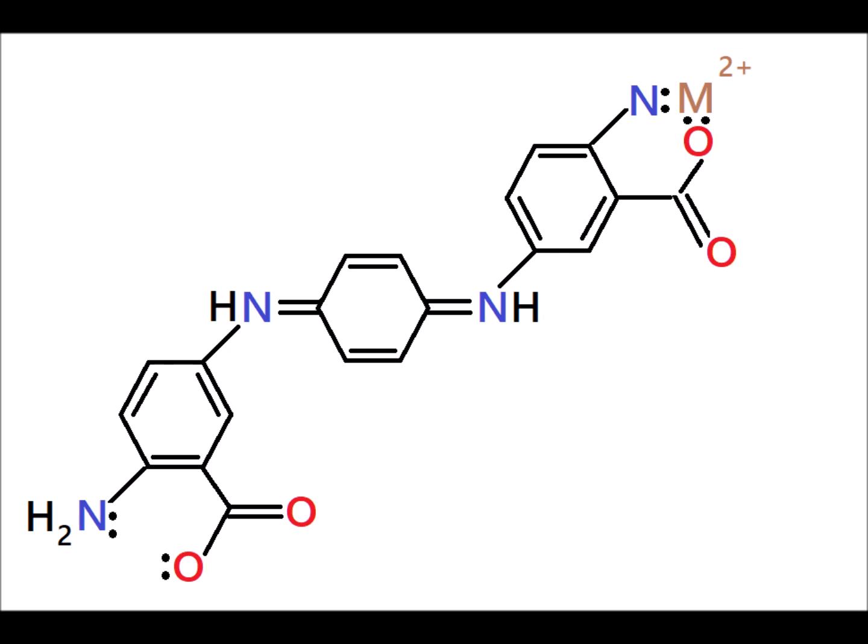If we start with an oligomer made from anthranilic acid, we notice that we have a carboxyl group that is ortho to the amine group. Each of those provides an attachment point for the Lewis bases, the ligands, to bind to the divalent metal ion. And if we have two of these, one at each end, then the charges on the metal ion are plus two, the charges on the ligands are minus two. So we end up with a neutral cross-linking in that case.